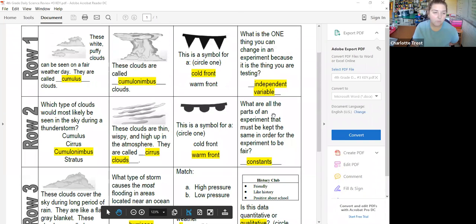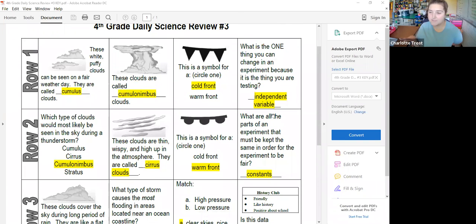So row one, you need to look at the picture and decide what type of clouds those were. Those were cumulus clouds. So those are the ones that you get a nice fair weather day, it usually means there's sunny blue skies outside.